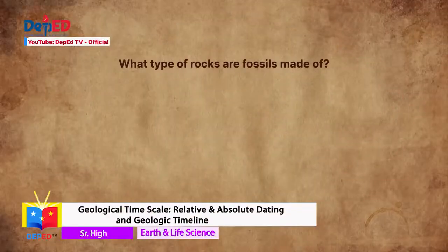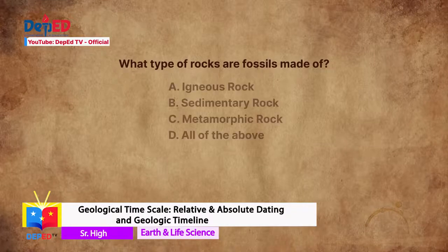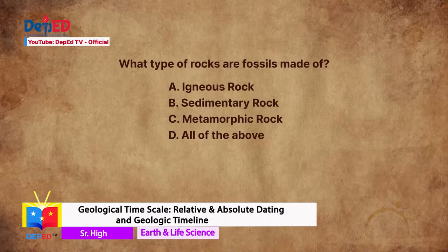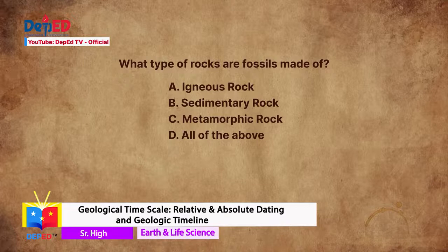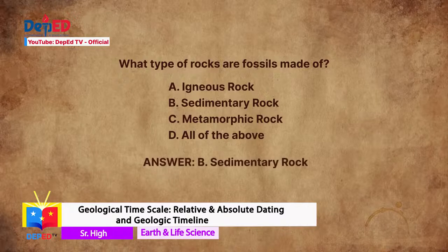What type of rocks are fossils made of? A. Igneous rock. B. Sedimentary rock. C. Metamorphic rock. D. All of the above. The answer is B. Sedimentary rock. Am I right? Cool!